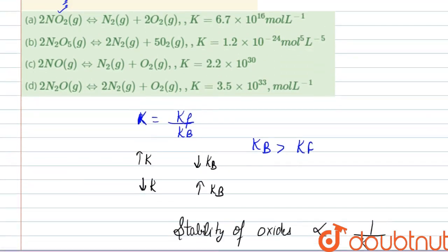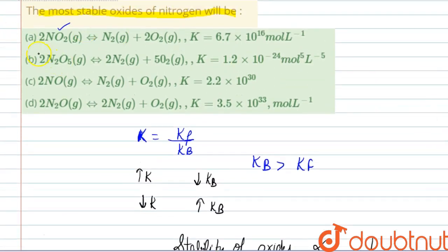So this will be the most stable oxide for nitrogen in this case. N2O5 will be the most stable nitrogen oxide because of lower value of K. So this will be most stable.